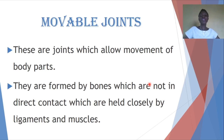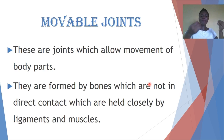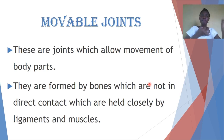Movable joints are formed by bones which are not in direct contact, and which are held closely by ligaments and muscles. Muscles are tied loosely so that they can easily move. If bones were fused together, bone to bone, it would be very difficult for movement to occur. But because something else holds them in place, there is the ability for one bone to slide over the other.